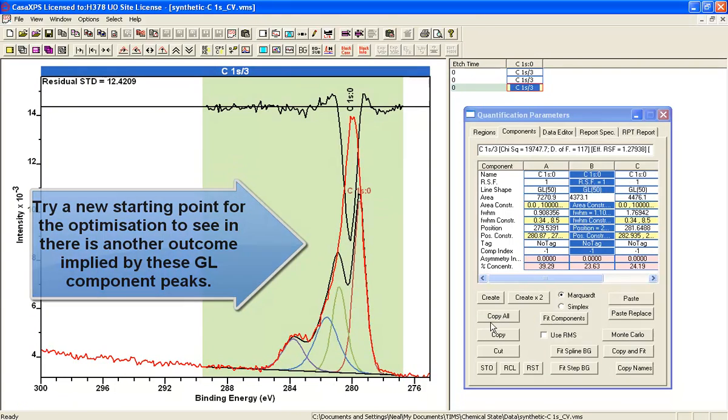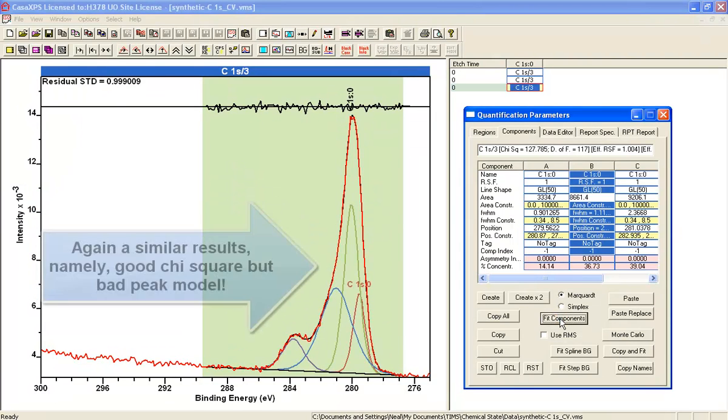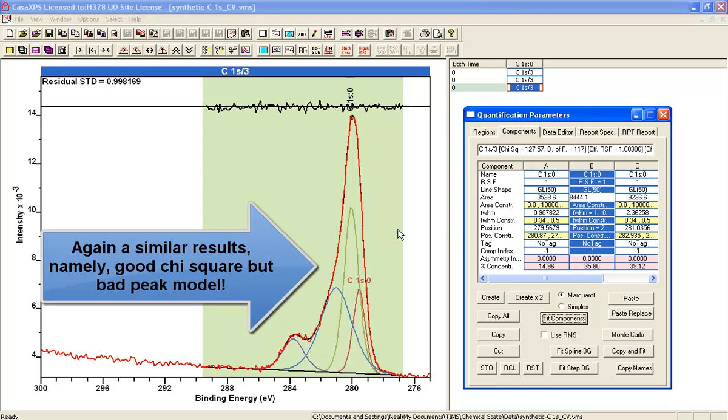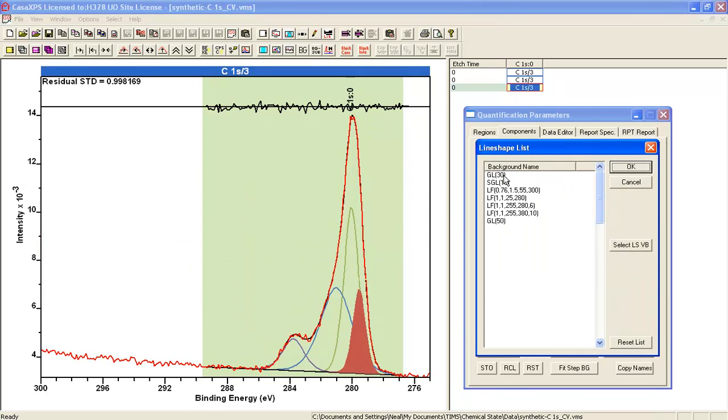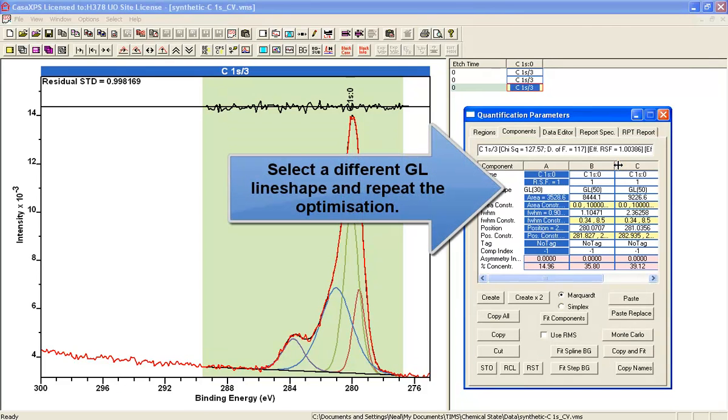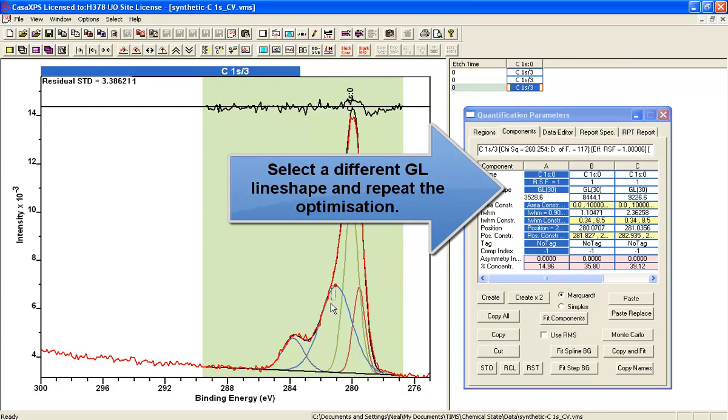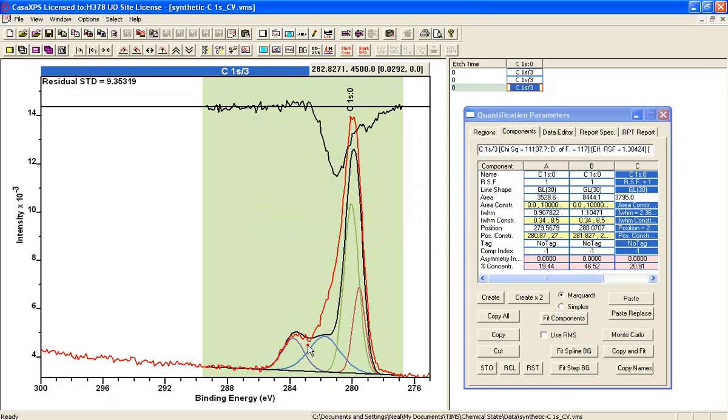So perhaps it was just a starting point. So we'll try a different starting point. And we've come up with, once again, a good residual standard deviation. It's gone back to this shape. So the line shape has influenced the outcome for the peak model. It's not the one that we know it to be. And it has had a significant effect on the outcome.